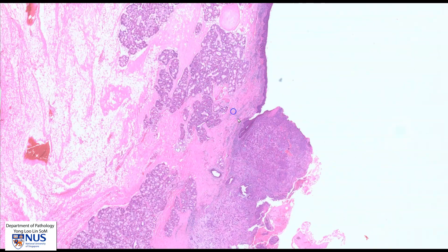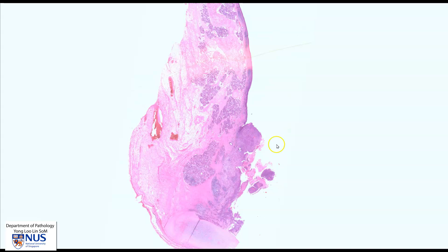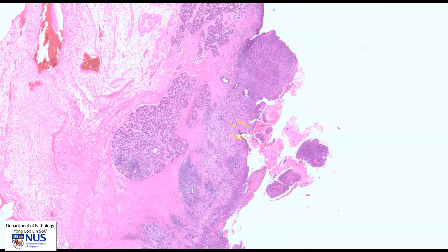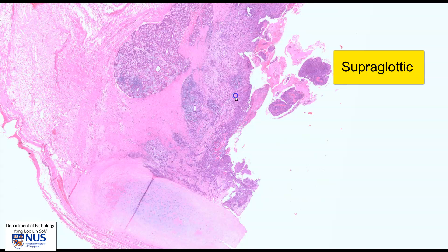So we are moving downwards, and this is the region of the vocal cords. Here would be roughly where the false vocal cord would be, and the ventricle, and then the starting of the true vocal cord. So we have this whole area that is involved by tumor, and therefore this tumor stretches from the supraglottic region and into the true vocal cord.